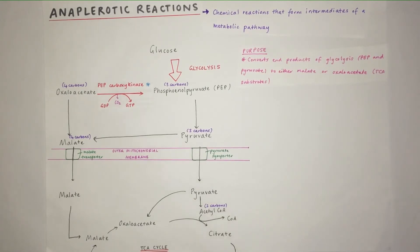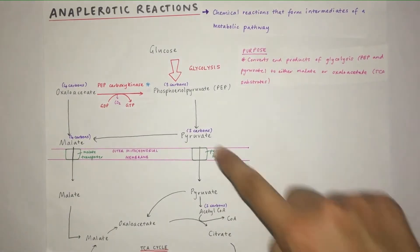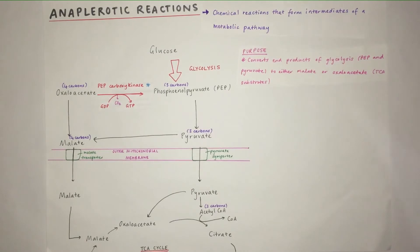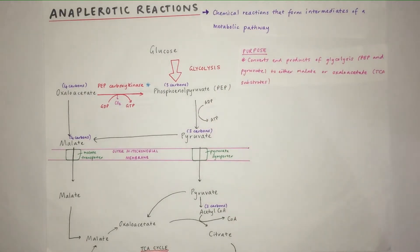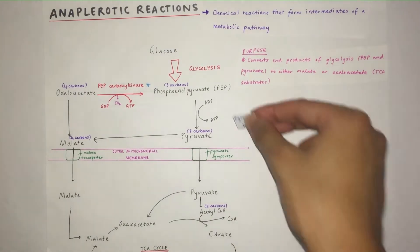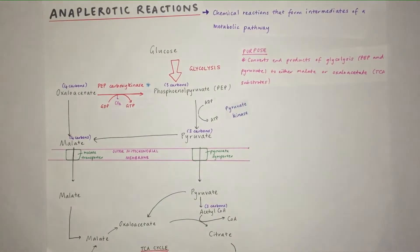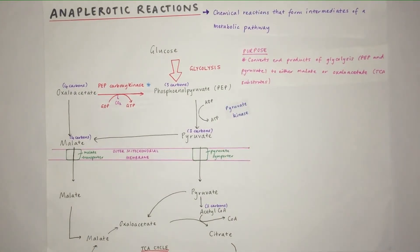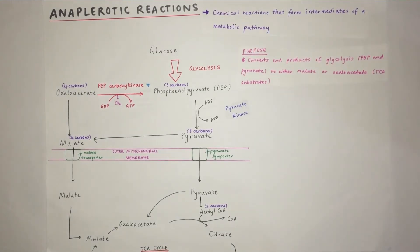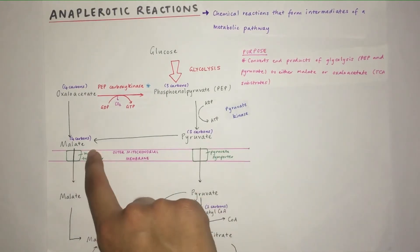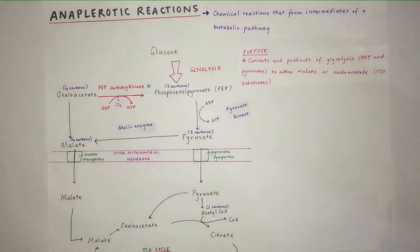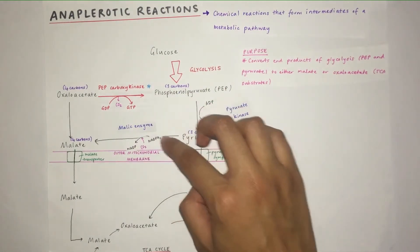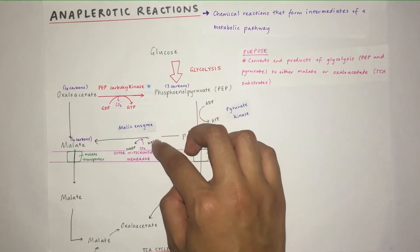Next up, we've got PEP becoming pyruvate. This is the last step of glycolysis, and an ADP is converted to an ATP. The enzyme is pyruvate kinase. If you're familiar with glycolysis, that should make sense. Pyruvate can also become malate through malic enzyme, and in this case an NADPH is converted to NADP, and CO2 is added because pyruvate has three carbons while malate has four.